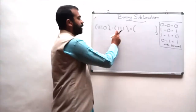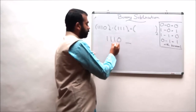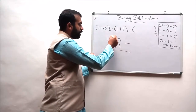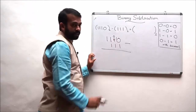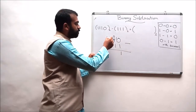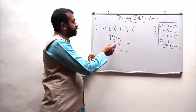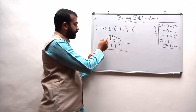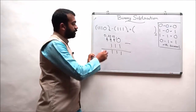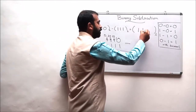The fourth example is subtracting 1-1-1 from 1-1-1-0. For 0 minus 1, we borrow — that gives 1-0 minus 1, resulting in 1, and leaves 0 in the next position. Again 0 minus 1 requires borrowing: 1-0 minus 1 equals 1. Once more, 0 minus 1 requires borrowing: 1-0 minus 1 equals 1, leaving 0. So the result is simply 1-1-1, meaning the final answer is 1-1-1 to the base 2.